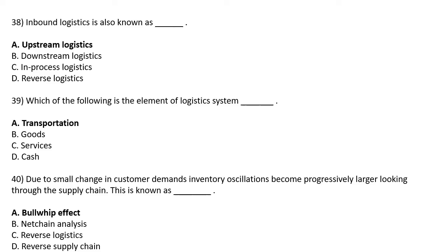Which of the following is an element of the logistic system? Option A: Transportation, Option B: Goods, Option C: Services, Option D: Cash. The correct answer is Option A: Transportation.